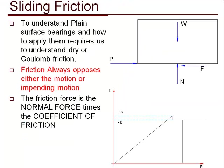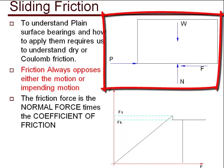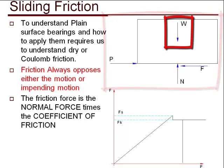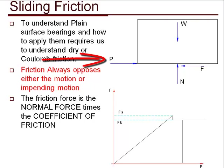An understanding of Coulomb or dry friction will help us understand better the operation of plain surface bearings. If we look at a free body of a block with weight W being pushed along by the force P, we can see that there are two other forces, N and F.